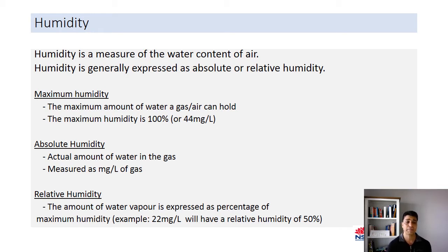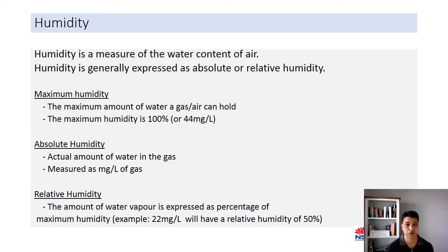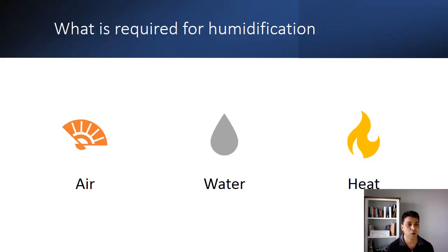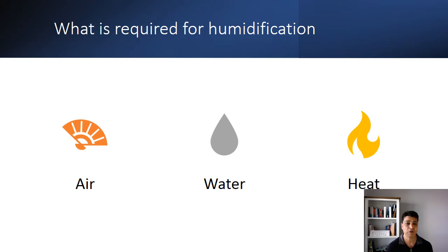The maximum amount of moisture or water that air can hold is about 44 milligrams per litre, which is about 100% moisture or humidity. What is required for humidification? Air, water, and heat. These are the three things required for humidification, but note that with the increase in heat, humidity increases, and the presence of water is equally important.